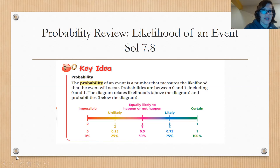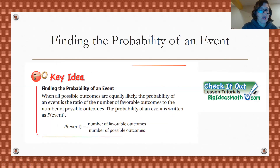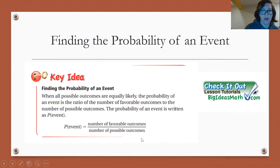Today we're going to move on and talk about finding the probability of an event. The key idea from bigideasmath.com: when all possible outcomes are equally likely, the probability of an event is the ratio of the number of favorable outcomes to the number of possible outcomes. The probability of an event is written as P(event) and equals the number of favorable outcomes over the number of possible outcomes.